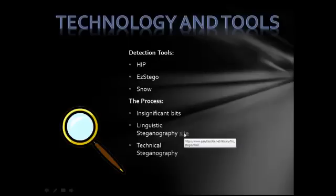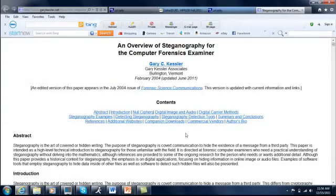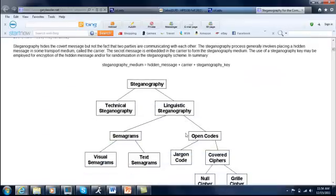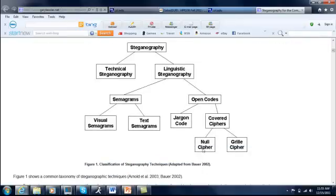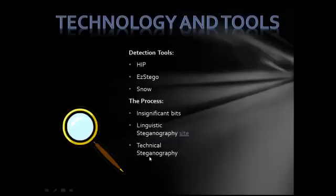Visiting this classification diagram, we can see how steganography is split up. We see technical steg and linguistic steg. Linguistic steg branches into semagrams and open codes. Semagrams use symbols and signals to transfer messages. Open codes use carrier messages which hide and encrypt the actual image that you are trying to hide.